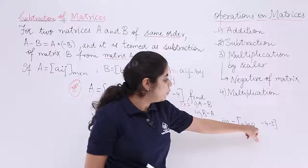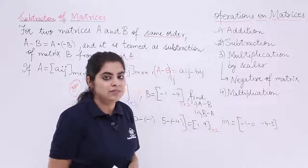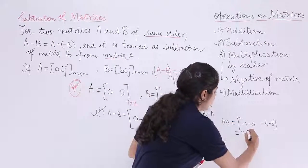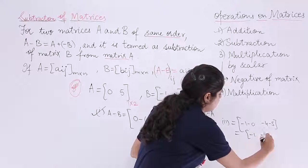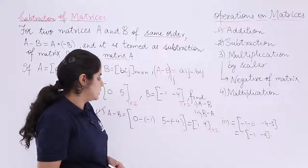Minus 1 minus 0 is minus 1 only. Minus 4 minus 5 is minus 9. So it is minus 1, minus 9. So it is minus 1 minus 9 that we obtain as the answer.